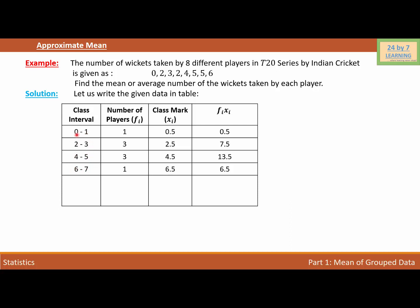For the class interval 0 to 1, I have only one player. From 2 to 3, I have 1, 2, and 3 — that's 3 players. For the class interval 4 to 5, I have 1, 2, and 3 — again 3 players. And from 6 to 7, I have only one player.